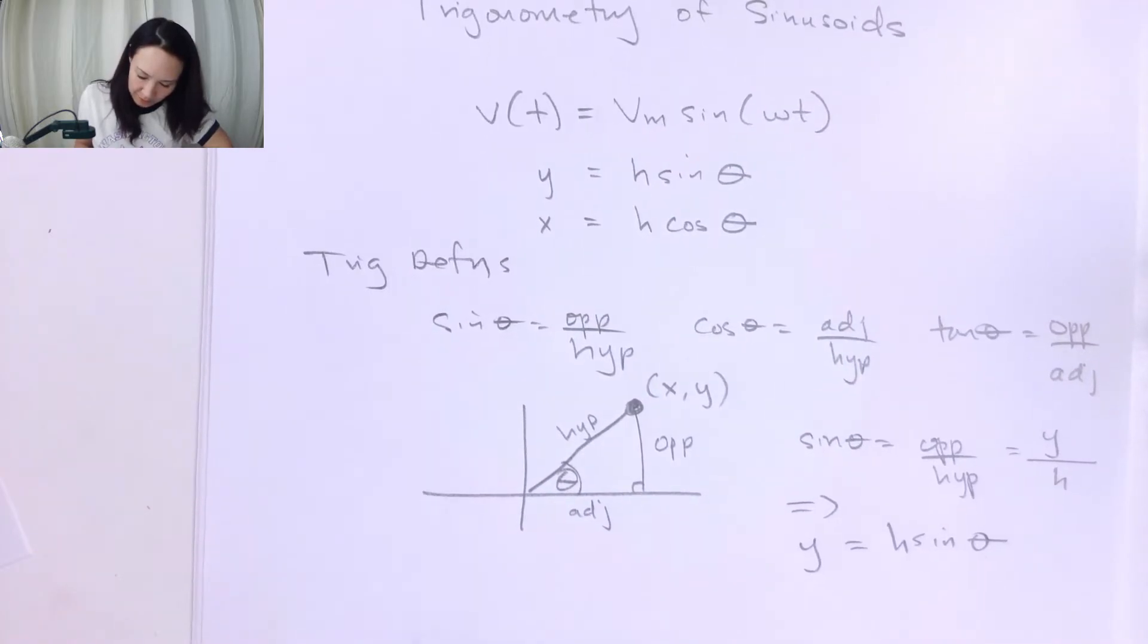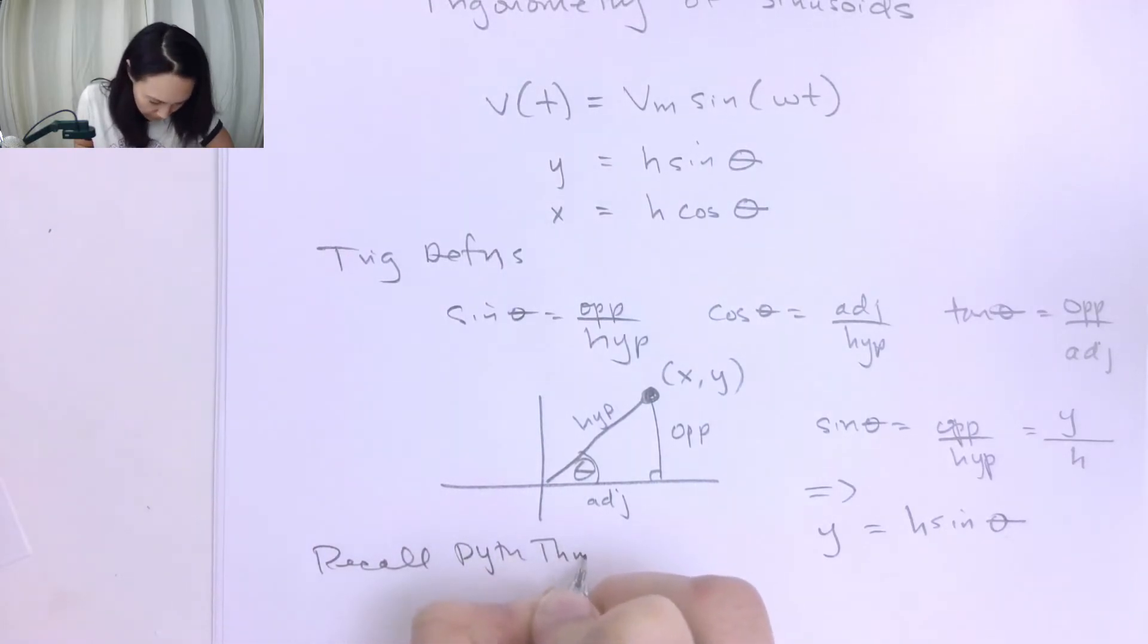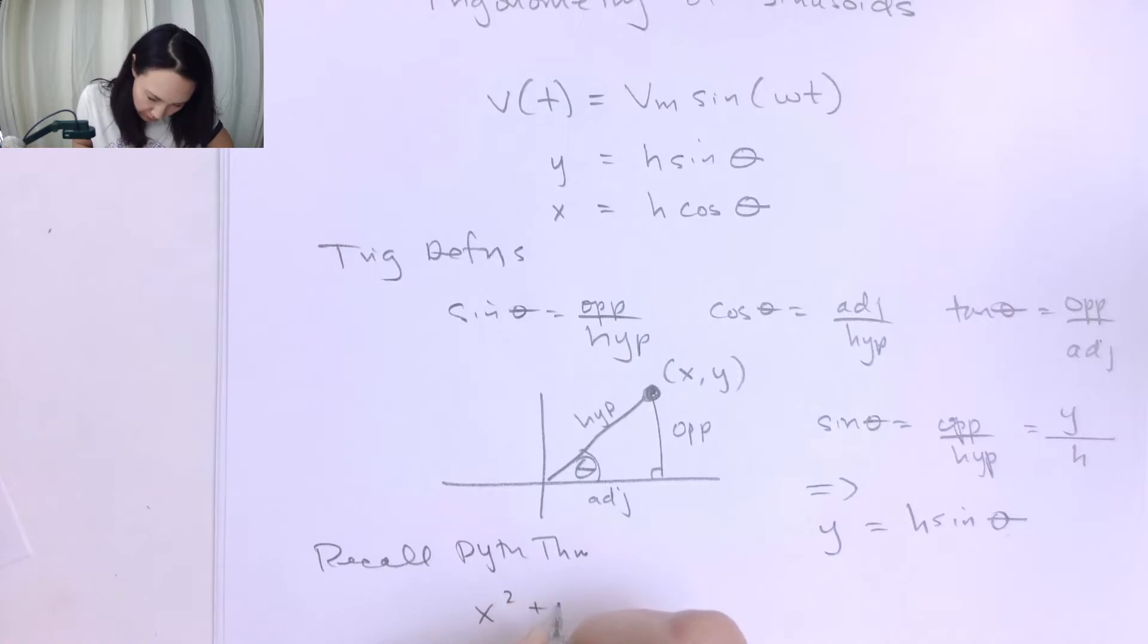So then from there, if you recall the Pythagorean Theorem, that says that X² + Y² = H².